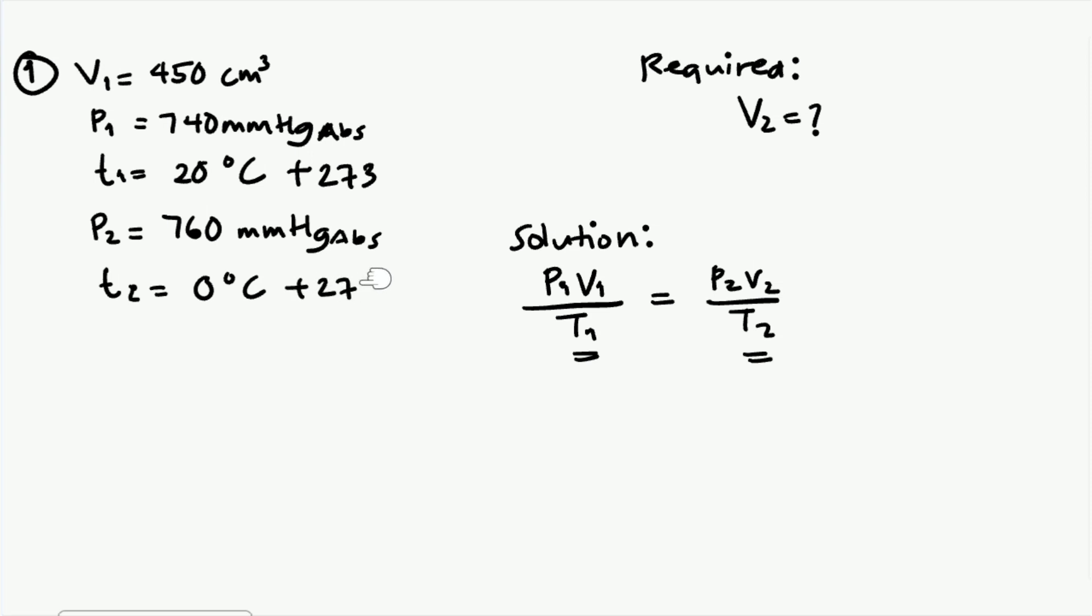So for arbitrary temperature in degree Celsius, add 273. So if initially in arbitrary, it becomes absolute. Now we'll substitute the values. The temperatures at point one and point two are already absolute, so we just substitute all the given values to get V2.